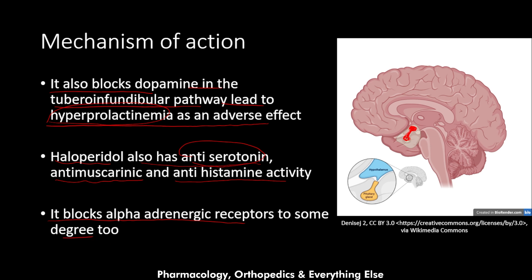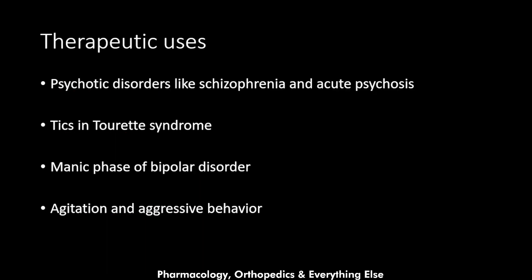Alpha-adrenergic blockade leads to orthostatic hypotension and lightheadedness. Regarding therapeutic uses, haloperidol is used in the treatment of psychotic disorders such as schizophrenia and acute psychosis. In schizophrenia, it manages both the positive symptoms — delusions and hallucinations — and the negative symptoms such as social isolation, loss of interests, and flat affect.